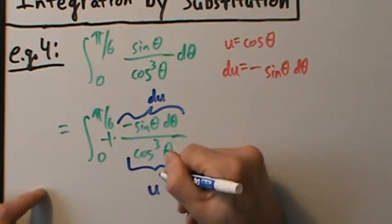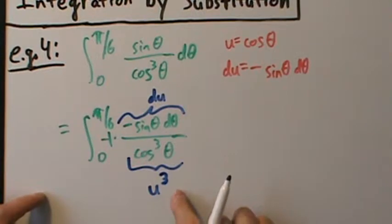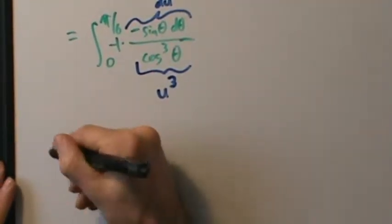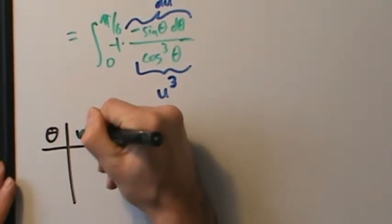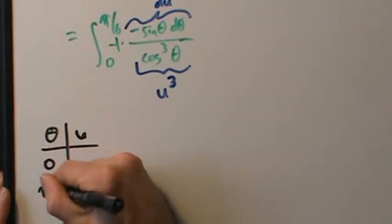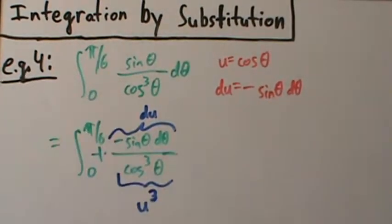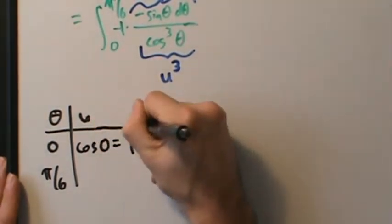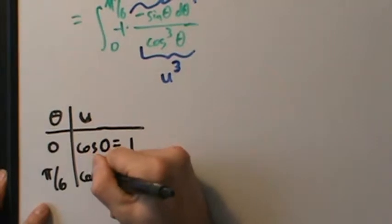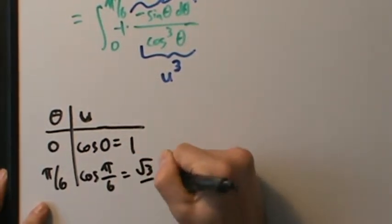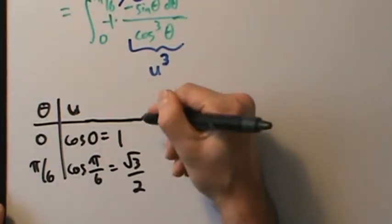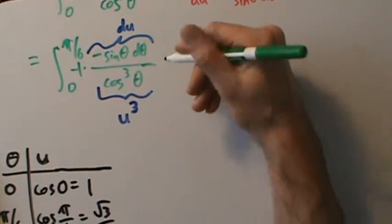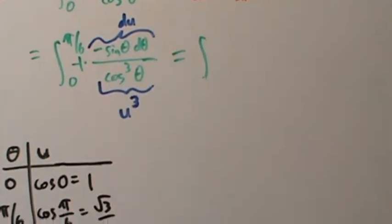And cosine cubed of theta is u cubed, because u is cosine of theta. Now we have to change the limits. We make a little chart with theta and u. Theta goes from 0 to pi over 6. Since u is cosine of theta: when theta is 0, u is cosine of 0, which is 1. When theta is pi over 6, u is cosine of pi over 6, which is root 3 over 2 — just a unit circle fact. So when we change the variable, we change the limits of integration. This becomes the integral from 1 to root 3 over 2.